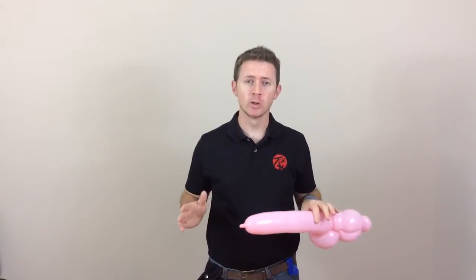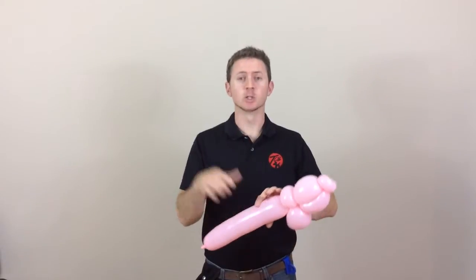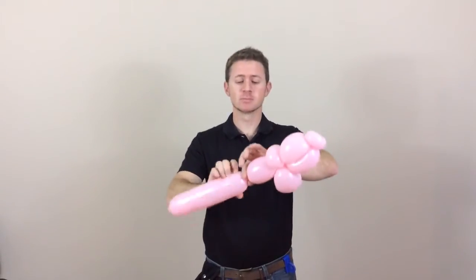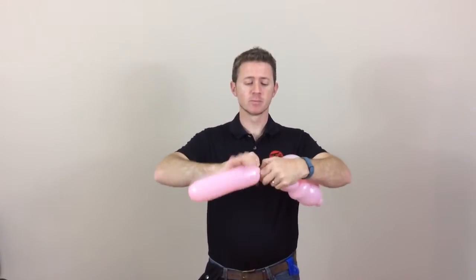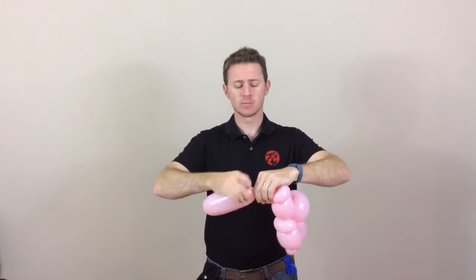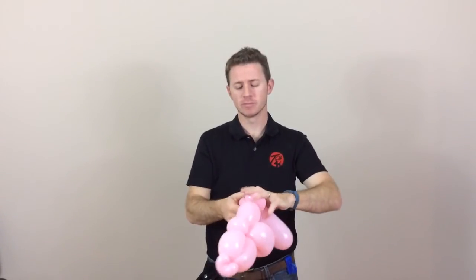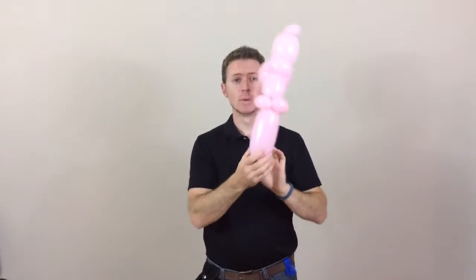Make a neck. Now you want to make the neck a little bit longer than you would normally make a neck on a dog and you have that single small bubble because you're going to put a leash around it. And then two pinch twists. Pop off the rest.